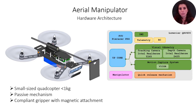Thanks to this, the aerial manipulator can attach a sensor on magnetic surfaces. The onboard controller is a fixed racer with a PX4 firmware. The onboard computer is an UpCore board. Sensing on board comprises the IMU, telemetry, but also visual odometry done through two different cameras — a tracking camera and a depth camera. We also have the manipulation on board, which has a quick release mechanism for attachment of the sensor.